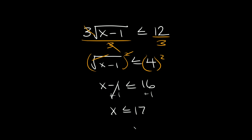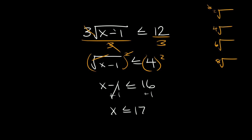Now there's one extra step we have to do whenever we're solving a square root. If you're solving a square root, a fourth root, a sixth root, or an eighth root — basically any even index — the one extra step we have to take is to set whatever's inside of the square root or even root greater than or equal to zero. We can't have a negative number inside of a square root, so that's why we have to take this extra step.